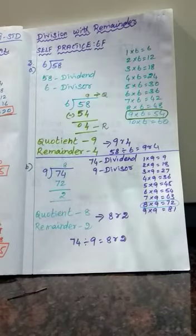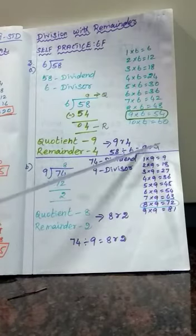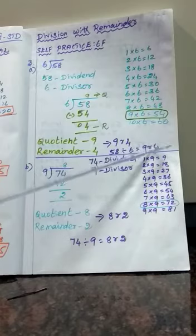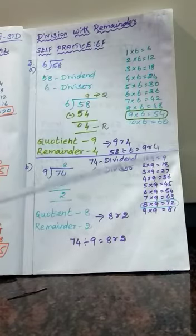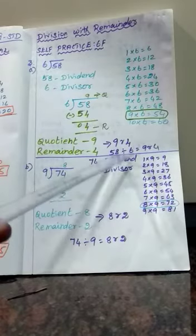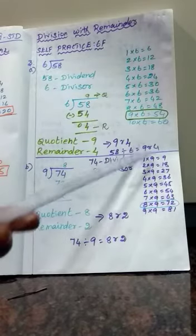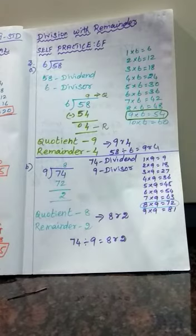This is the short method — if needed you write it, otherwise just write quotient 9, remainder 4. In your book you write it as: 9 quotient, R for remainder, then the remainder number. So 9, R, 4. Finally: 58 divided by 6 equals 9 R4.